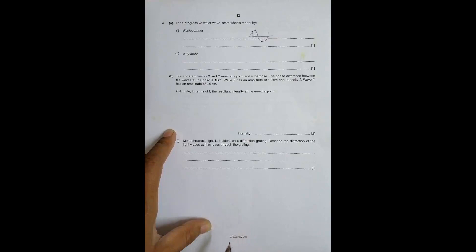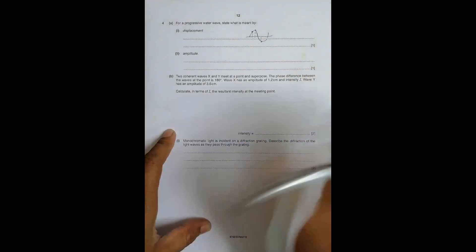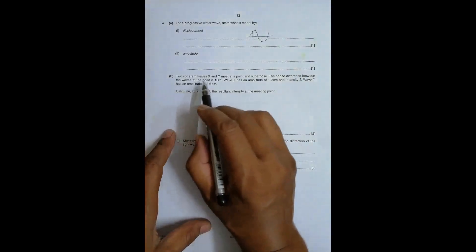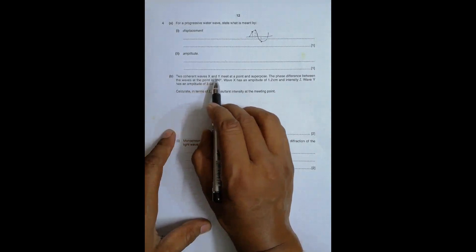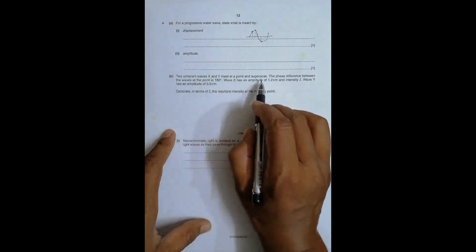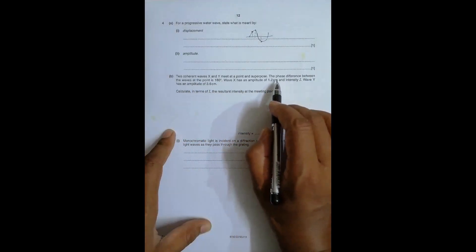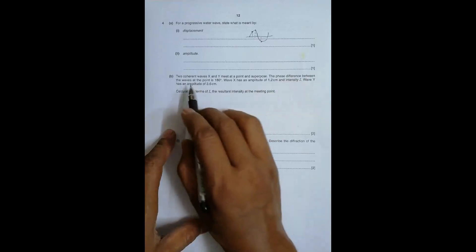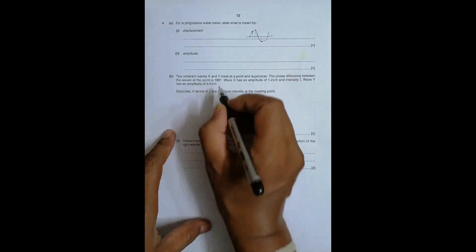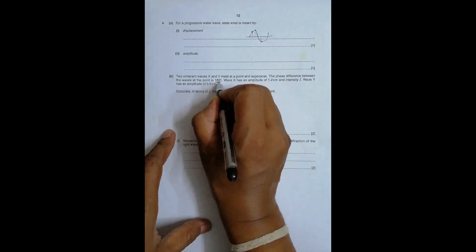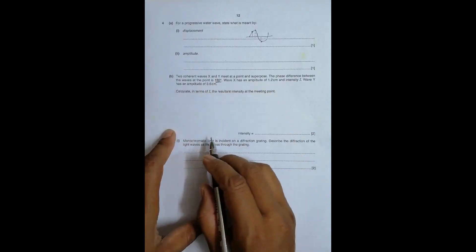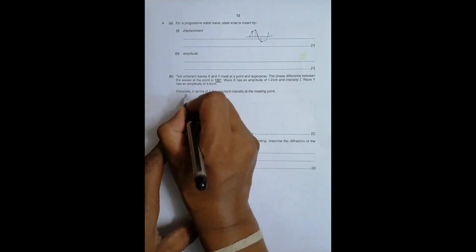Part B: Two coherent waves X and Y meet at a point and superpose. The phase difference between the waves at the point is 180 degrees, so that is destructive interference.